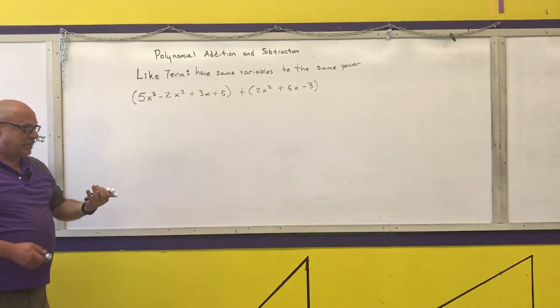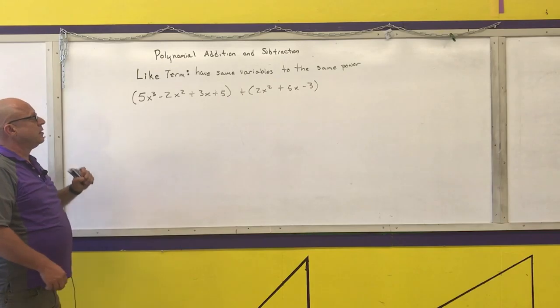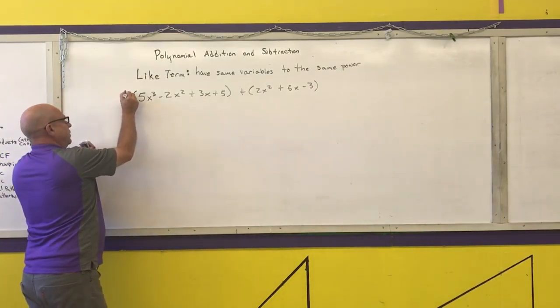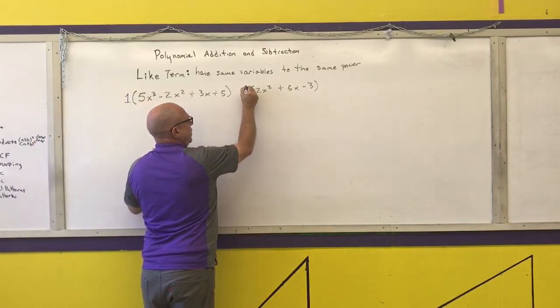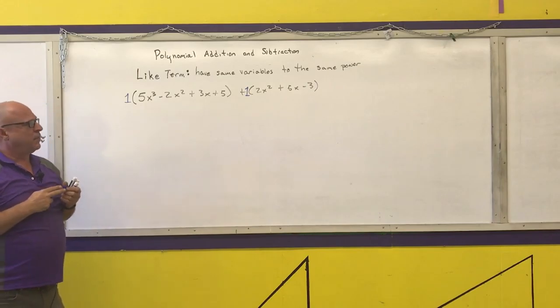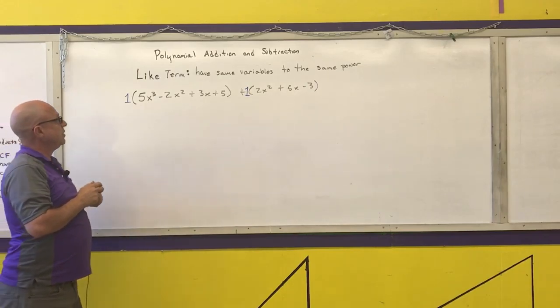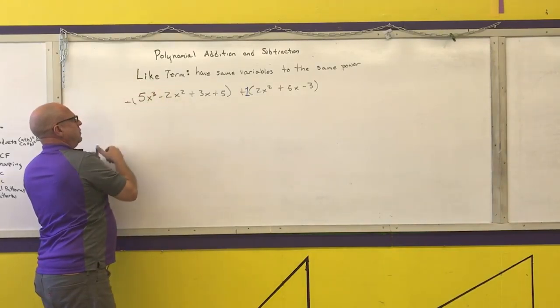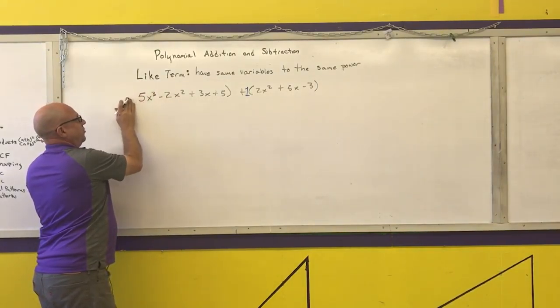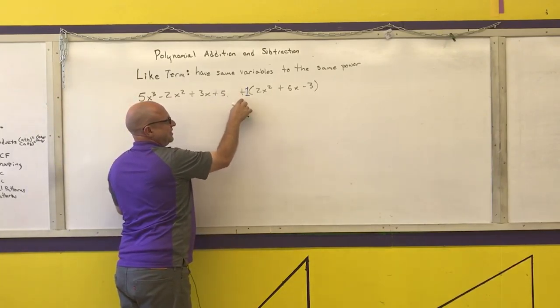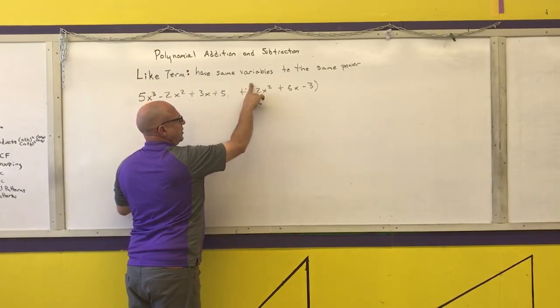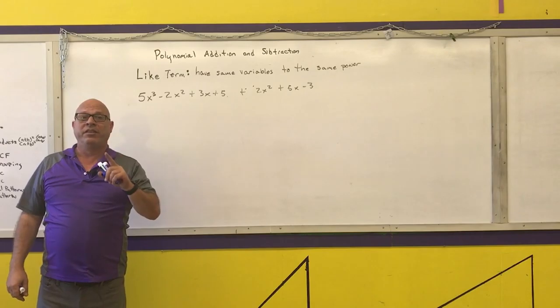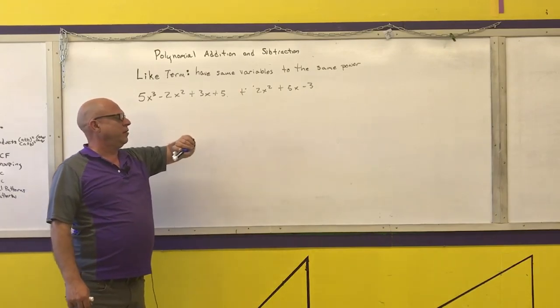You're only allowed to combine like terms. This set of parentheses has a one in front of it. Those are part of the invisible ones that I talk about in order of operations. If I were to distribute that one, the parentheses would just disappear. That only works if that number in between there was a plus sign.